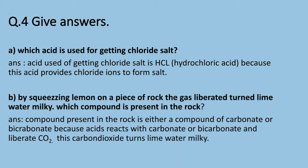Question four (a): which acid is used for getting chloride salt? The acid used for getting chloride salt is HCl — hydrochloric acid — because this acid provides chloride ions to form the salt.